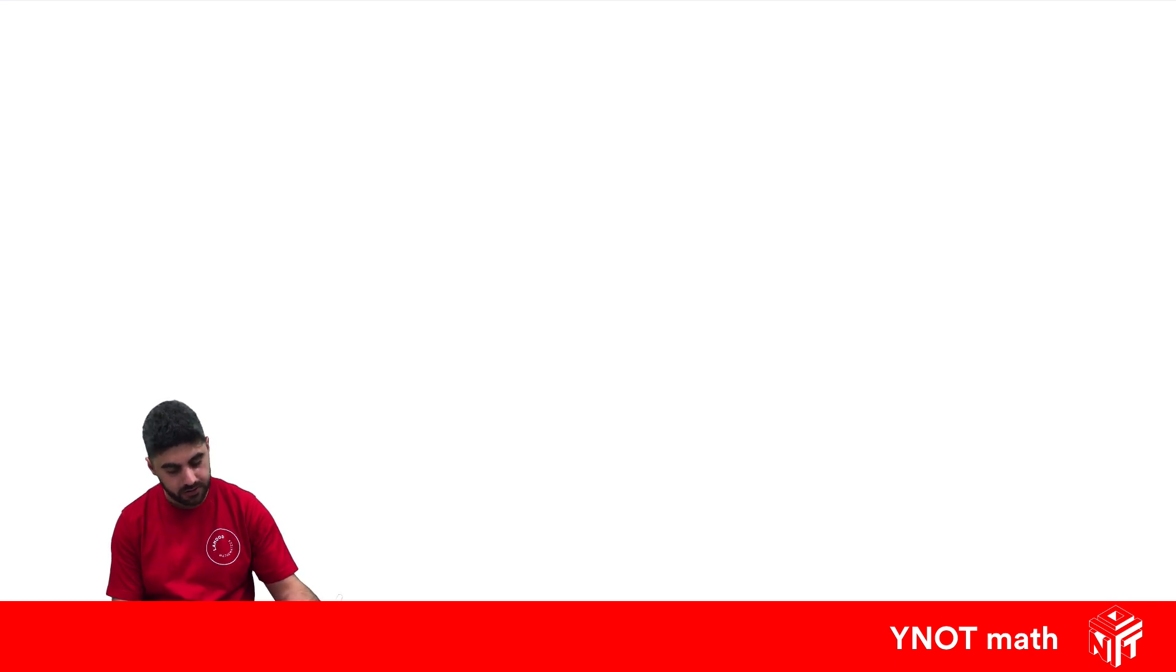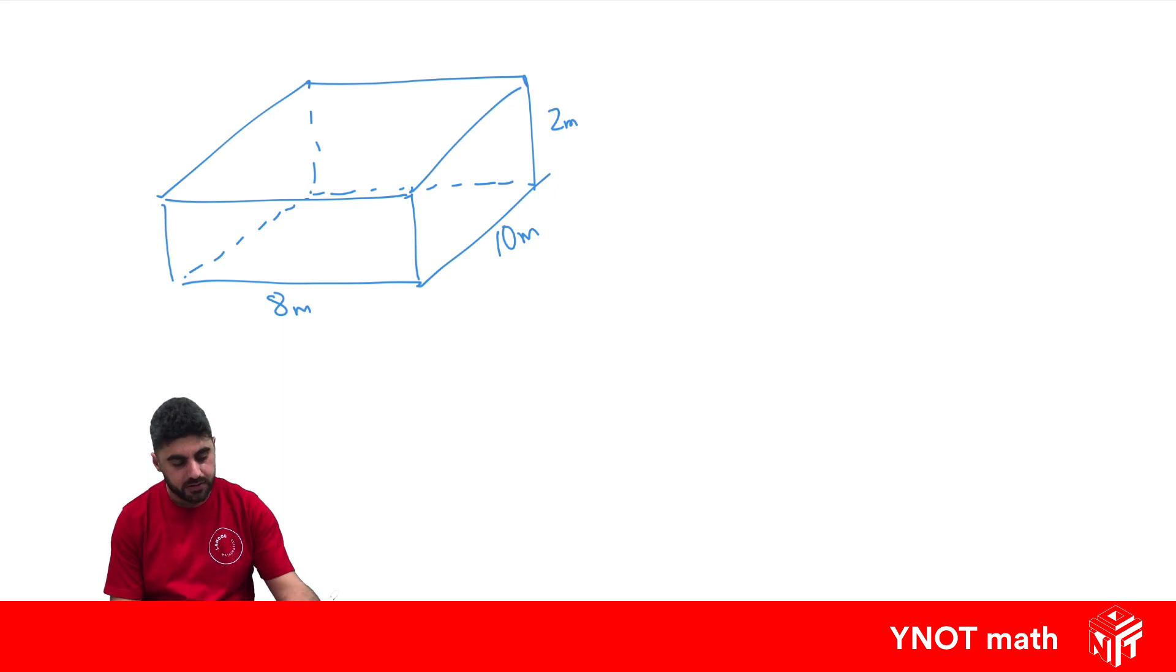Let's have a look at a rectangular prism. This would be 10 meters, 8 meters, and 2 meters. Now, how many faces does this prism have? Well, it has six faces.